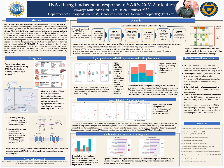SARS-CoV-2 is a complex pathogen affecting multiple organ systems, such as the nervous system, cardiovascular system, and even the musculoskeletal system, and shows an array of symptoms.